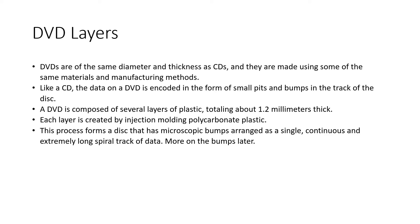DVDs are of the same diameter and thickness as CDs, made using some of the same materials and manufacturing methods. The data on a DVD is encoded in the form of small pits and bumps in the track of the disc. A DVD is composed of several layers of plastic totaling about 1.2 millimeters thick. Each layer is created by injection molding polycarbonate plastic, which forms a disc with microscopic bumps arranged as a single continuous and extremely long spiral track of data.